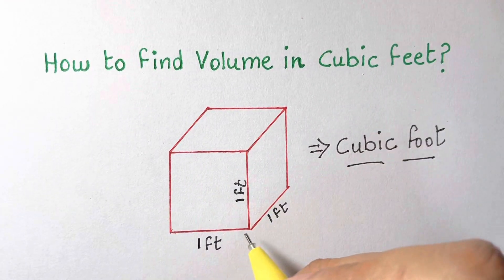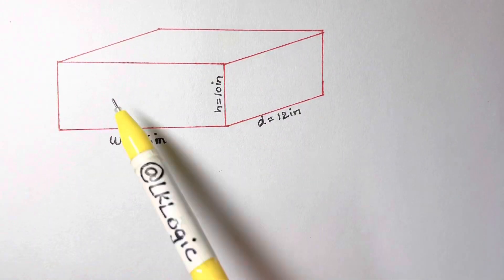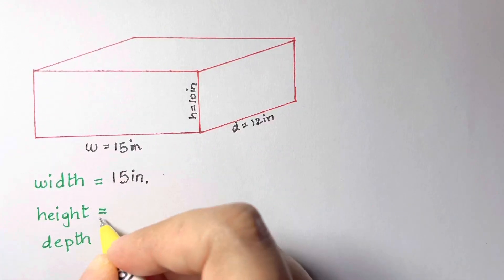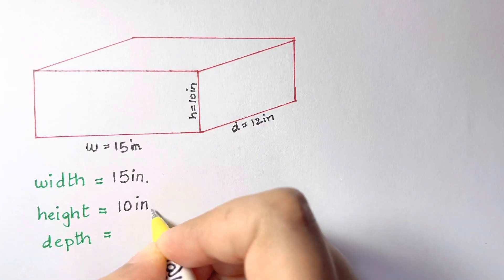It's actually smaller. The width of this box is about 15 inches. Width equals 15 inches, height is 10 inches, and depth equals 12 inches.